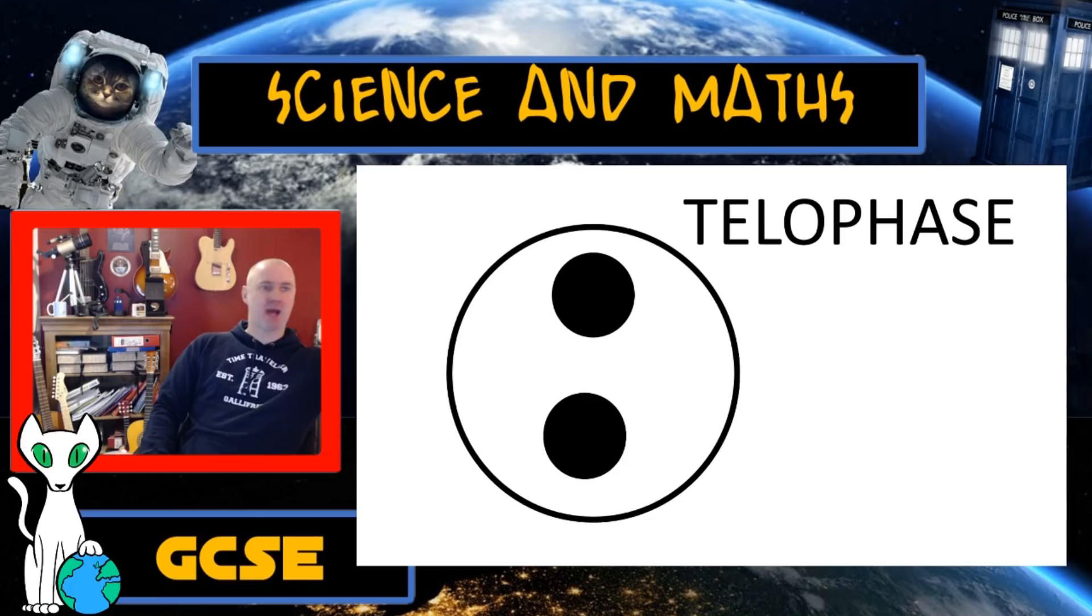If we remember tracing back to interphase right at the very beginning, the genetic material that is in these two nuclei is going to be identical to what was in that original cell. So we say that these are genetically identical nuclei. That will be important when we build our definition for mitosis in a minute.